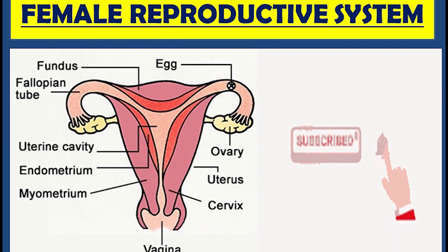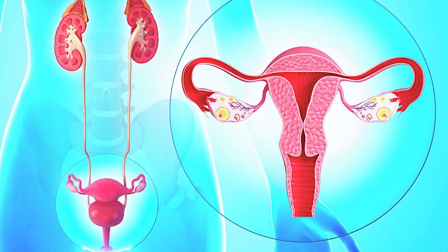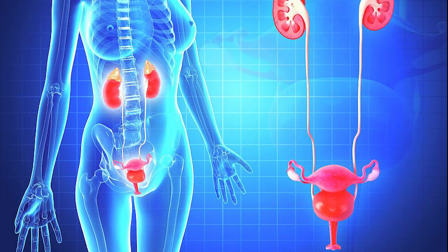The zygote will then divide over enough generations of cells to form a blastocyst, which implants itself in the wall of the uterus. This begins the period of gestation and the embryo will continue to develop until full term. When the fetus has developed enough to survive outside the uterus, the cervix dilates and contractions of the uterus propel the newborn through the birth canal, the vagina.